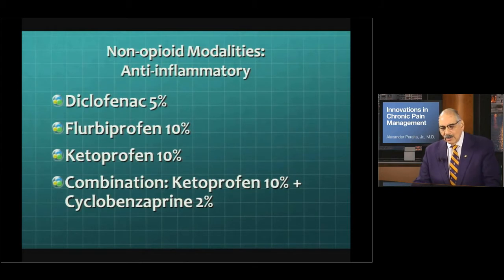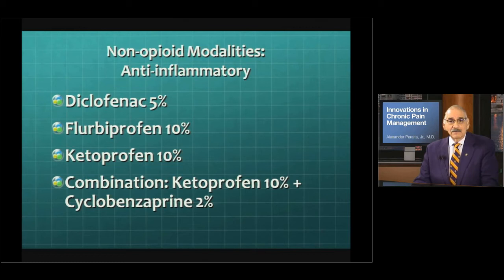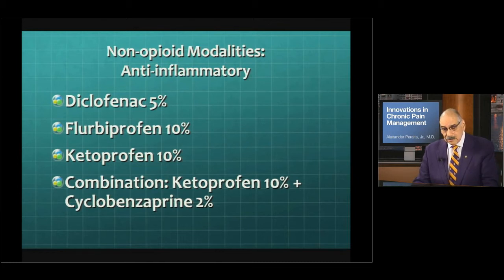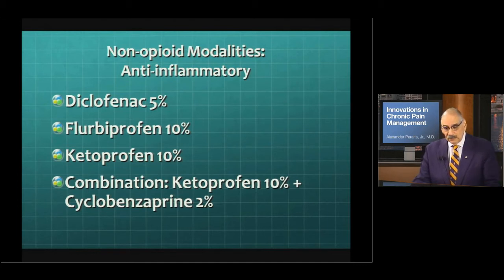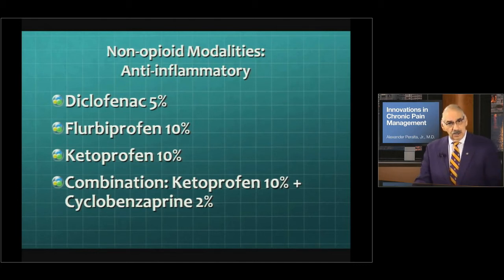We also have anti-inflammatory drugs that work through the cyclooxygenase pathway, and that also helps in relieving pain through prostaglandins. Different types of anti-inflammatory drugs have helped a lot. The one we use very often is ketoprofen, but in combination with certain other drugs it can also help.